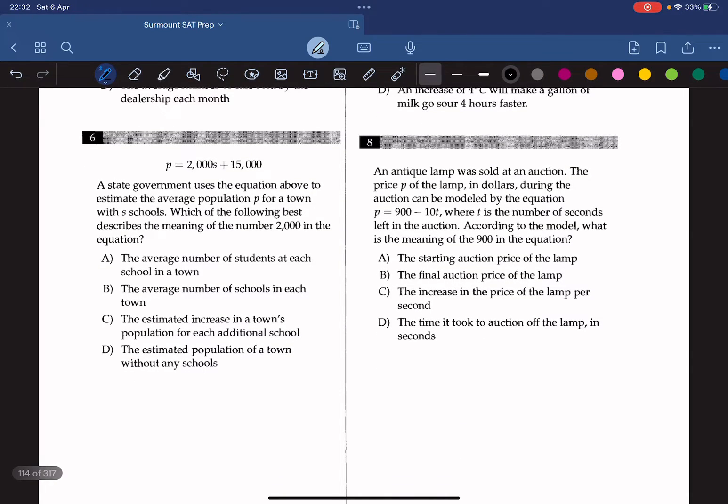Question 6: the state government uses the equation above to estimate the average population P for a town with s schools. Which of the following best describes the meaning of 2000 in the equation? The number 2000 here again refers to the slope, and this means that it should be increasing by 2000 for each additional school in the town, so the answer is C.